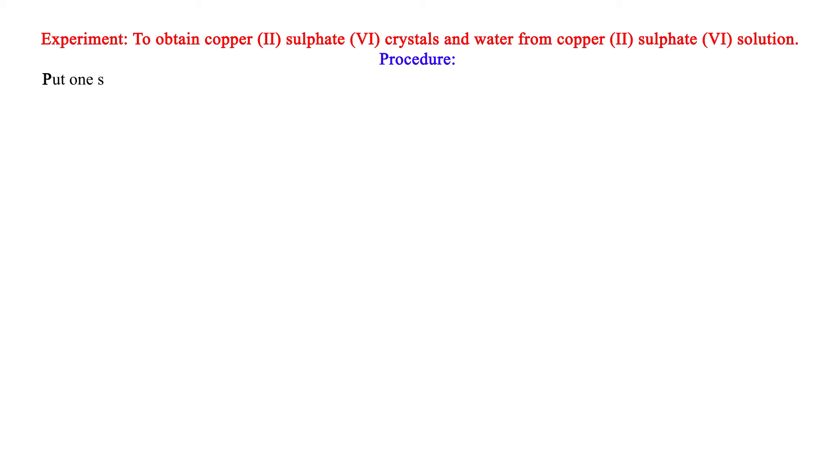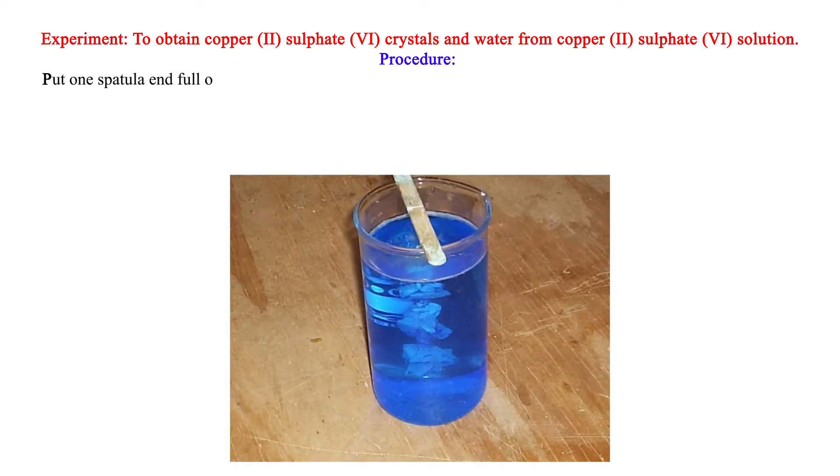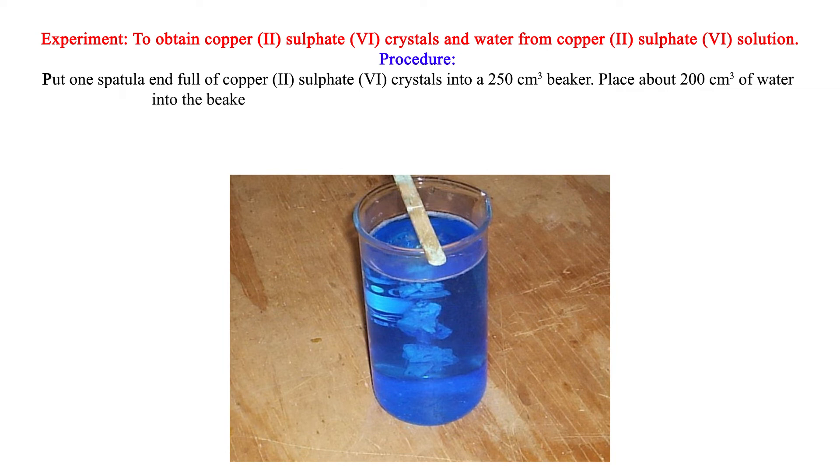Procedure: Put one spatula end full of copper (II) sulfate (VI) crystals into a 250 cm³ beaker. Place about 200 cm³ of water into the beaker.